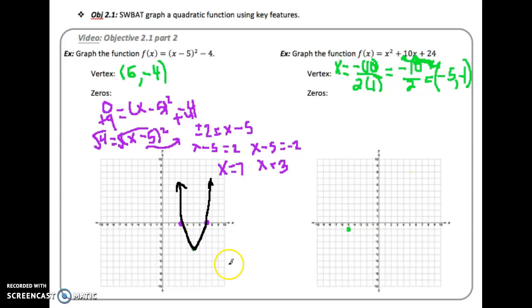So again when I want to find my zeros or my x-intercepts I'm going to make y equal to 0 because all the y-coordinates along the x-axis are 0. So we have 0 = x² + 10x + 24.